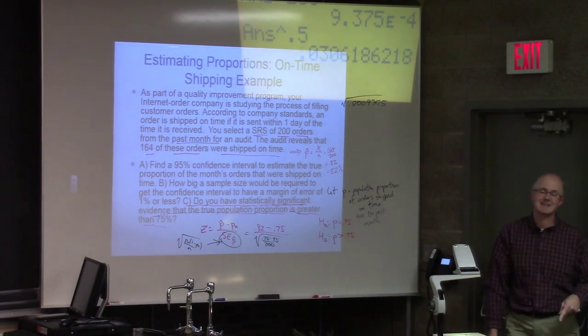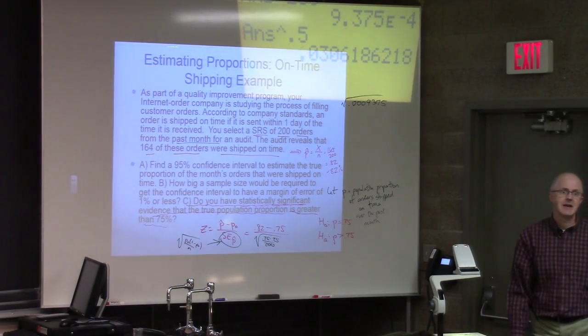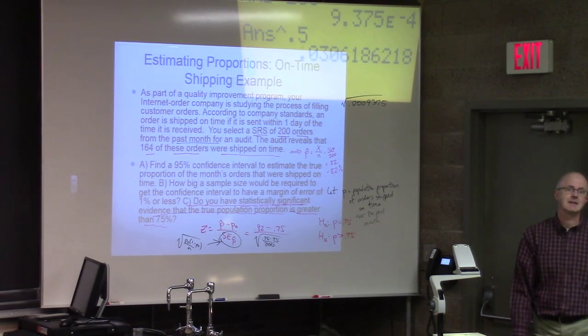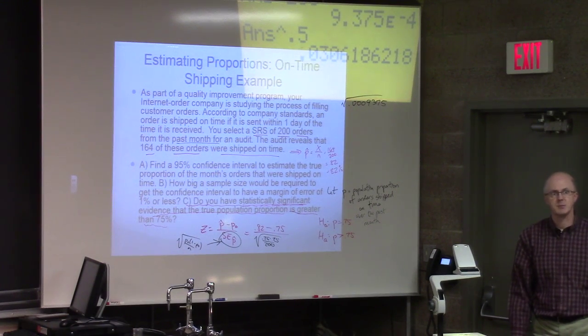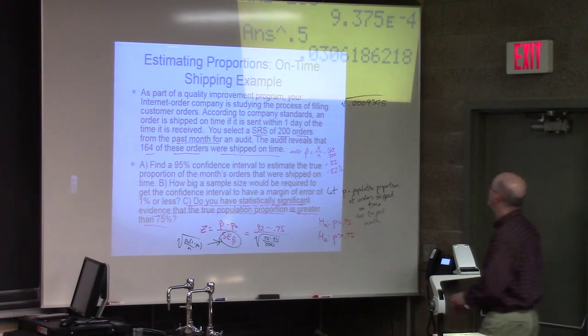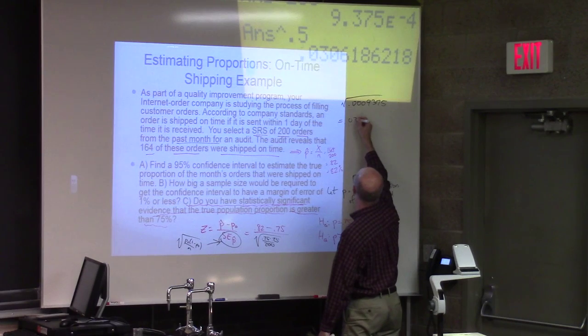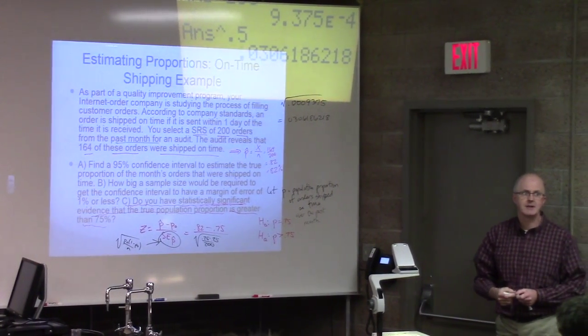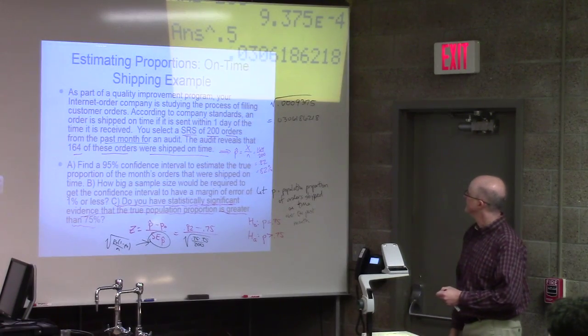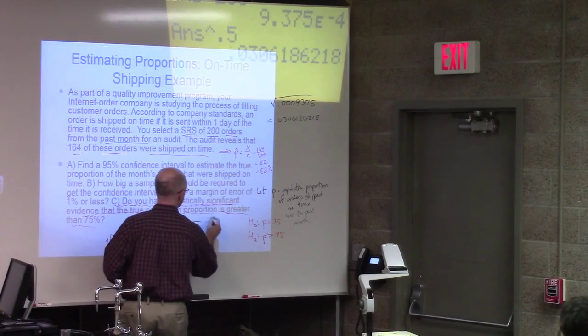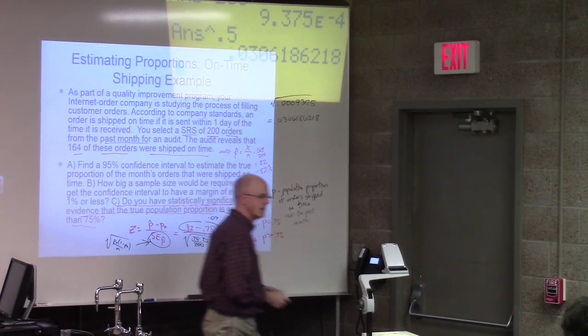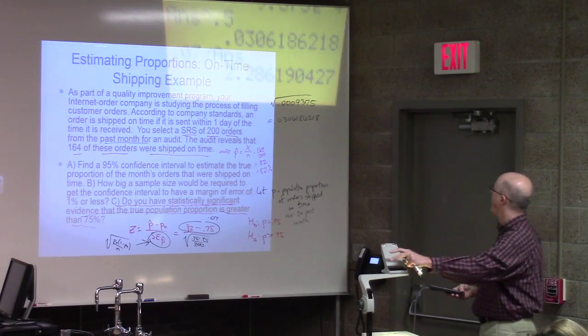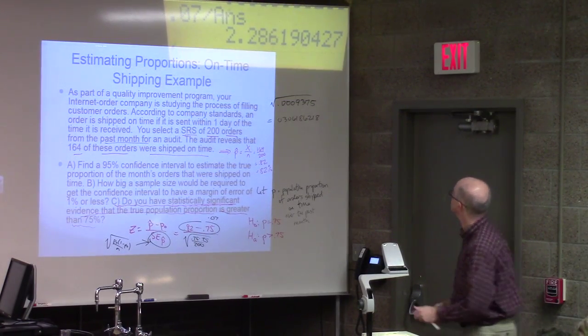When you do confidence intervals, then you use P hat because there is no null hypothesis. Let's use the calculators. 0.75 times 0.25 divided by 200. You'd be taking the square root of that to get the standard error that we divide by when we calculate the Z stat. Don't forget to take the square root. So the standard error is about 0.0306. Keep as many decimal places as you can and only round at the very end. So there's your standard error. That's what you divide by here. The numerator is 0.07. So do 0.07 divided by 0.0306. Now you can round that. Z is approximately 2.29.